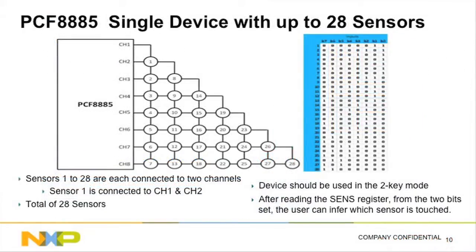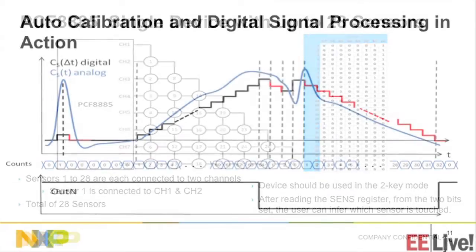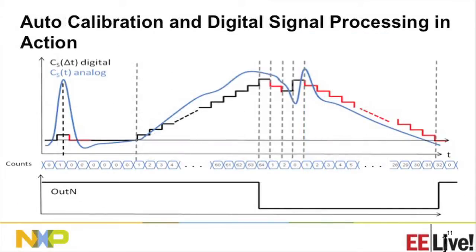This is how we got 28 touches using the eight channels — every single intersection is a unique touch point. For example, sensor one is connected to channel one and channel two, while sensor 19 is connected to channel four and channel five. So every single intersection is a different sensor point.